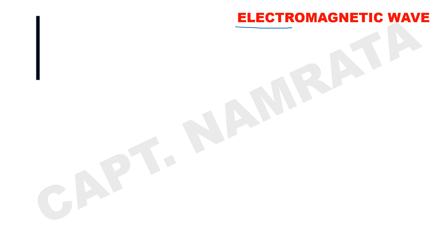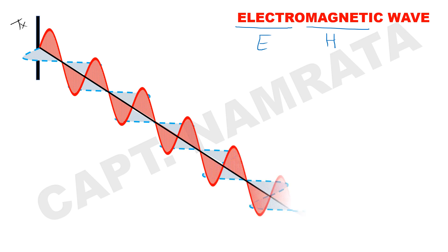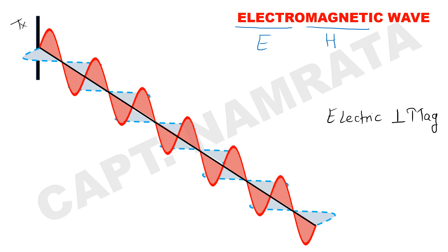A radio wave or an electromagnetic wave is a combination of two components — electric, indicated by E, and magnetic, indicated by H in some reference books. Anytime a current is passed through a wire, it produces an electromagnetic field. Both fields are oscillating and are always perpendicular to each other. In this diagram, you can see the transmitter is vertical, the electrical component is going in a vertical direction, and the magnetic component is traveling in a horizontal plane. The orientation of the electric component defines the polarization, because the electric field is usually stronger than the magnetic field.